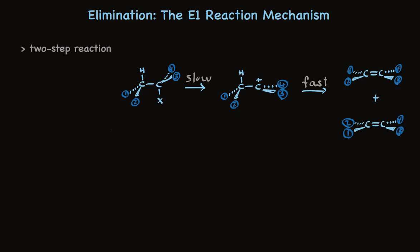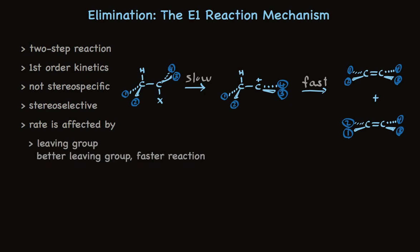Looking at the E1 mechanism, it's a two-step reaction. It has first-order kinetics, because there's only one reactant involved in the slow step. It's not stereospecific. We've seen that both stereoisomers of an alkene can be formed from one stereoisomer of the alkyl halide. But it can be stereoselective. As you would guess, the more stable alkene stereoisomer is formed more rapidly. The rate is affected by the leaving group. The better the leaving group, the faster the reaction. That makes sense. That carbon-leaving group bond is being broken in the rate-determining step. And the reaction rate is sensitive to the structure. Tertiary alkyl halides react much more rapidly than secondary alkyl halides. And primary and methyl alkyl halides don't react by the E1 reaction mechanism at all.